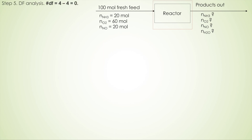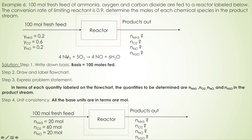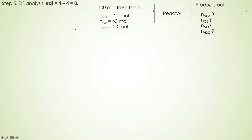Step five: degree of freedom analysis. The degree of freedom equals the number of unknown variables minus the number of known equations. In this problem, there are four unknowns, and from the reaction we know there are four species. So four minus four equals zero. The degree of freedom is zero, which means the problem is solvable.